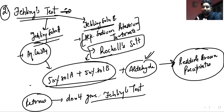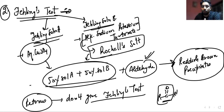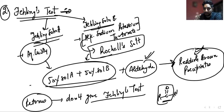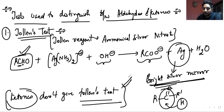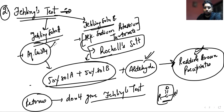Ketones also don't give Fehling's test for the same reason as with the Tollens test: ketones lack the hydrogen atom on the carbonyl carbon (R-C(=O)-R'). Due to this, ketones are neither able to give the Fehling's test nor the Tollens test. To summarize: in Fehling's test reddish-brown precipitates indicate an aldehyde; in Tollens test a bright silver mirror appearance indicates an aldehyde. Tollens reagent is ammoniacal silver nitrate; Fehling's solution A is aqueous copper sulfate and solution B is alkaline sodium potassium tartrate.